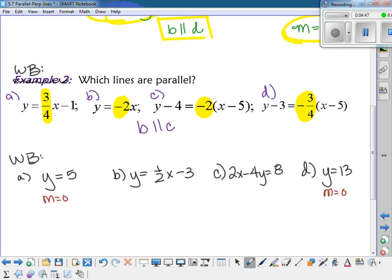Which means it's what kind of a line? It's horizontal. Okay, so I know that A has to be parallel to D because they're both horizontal. They both have a slope of zero.